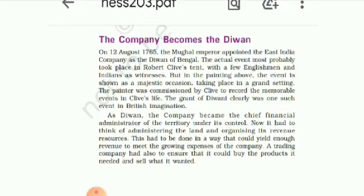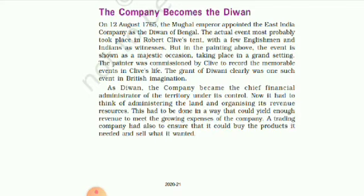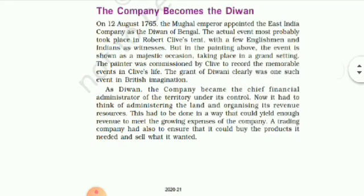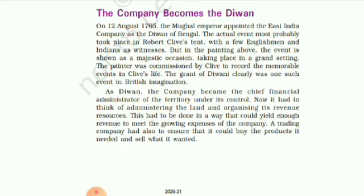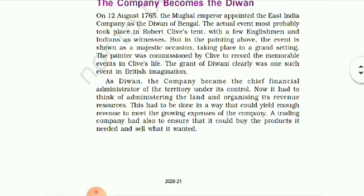First of all, we shall see about the company becomes the divan. On 12 August 1765, the Mughal Emperor appointed the East India Company as the divan of Bengal. This was a great mistake of the then Mughal ruler, appointing the East India Company as divan of Bengal. This was a great mistake of the Indian ruler.